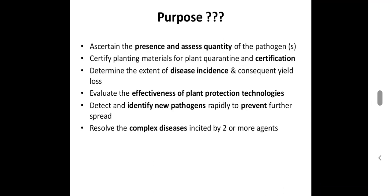What is the purpose? Why study detection and diagnosis? First, to identify or clarify the presence and quantity of the pathogen — how much quantity of pathogen is present in a given plant sample. Then, it is needed for certification or testing carried out in plant quarantine. Next, to determine how much disease incidence is there, and from that, calculate the yield losses. It also evaluates the effectiveness of plant protection technologies, and rapidly detects and identifies new pathogens to prevent further spread and damage.